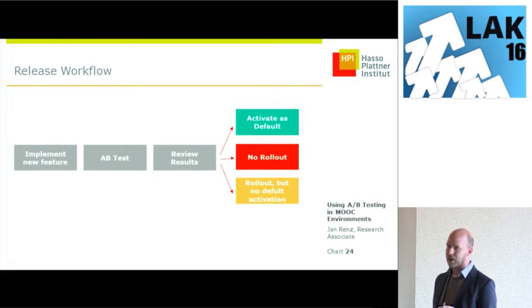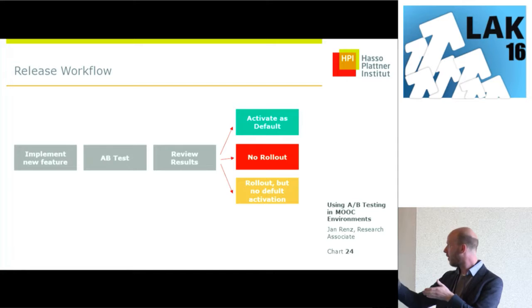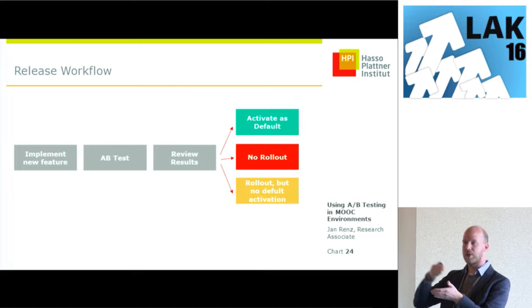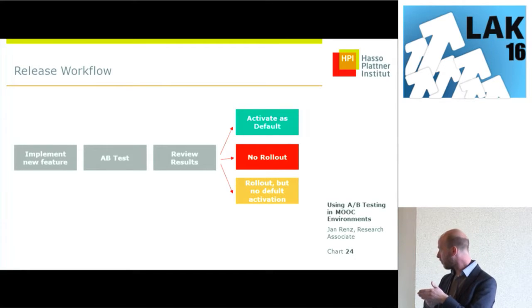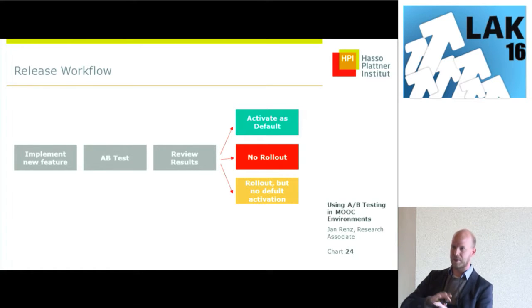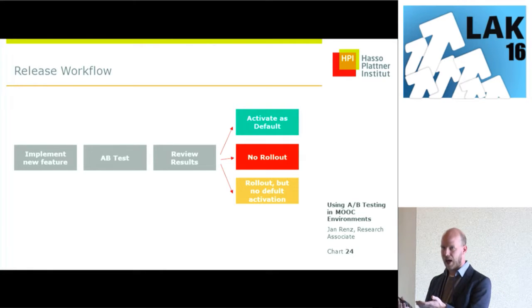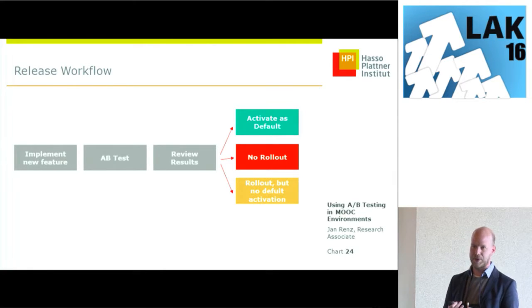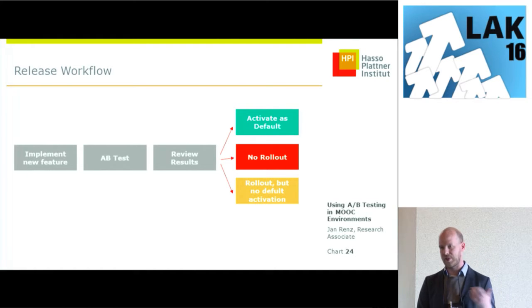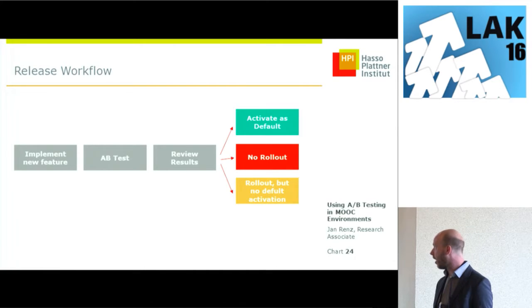We also defined a release workflow: every new major feature we roll out in an A-B test, then review the results, and based on that have a discussion. There's no automatism — if there's a good metric change, we still discuss it in a team of experts and decide if it's positive enough to activate as default. We might not roll it out if there's a negative impact. Or if the change is fuzzy — not really significant or not as high as expected — we might roll it out but deactivated, leaving it up to the user, like the digest mail for example.